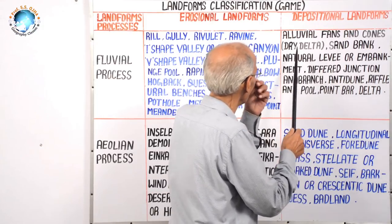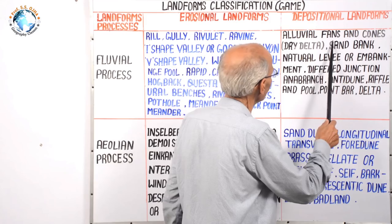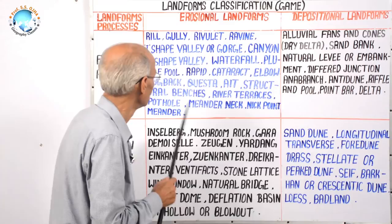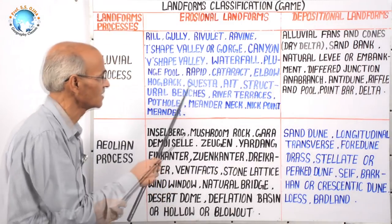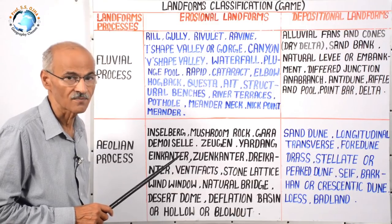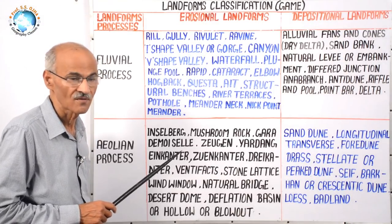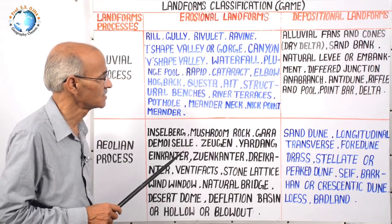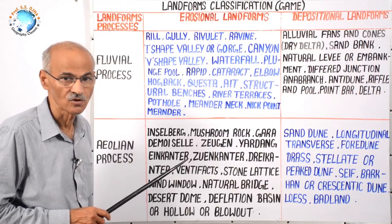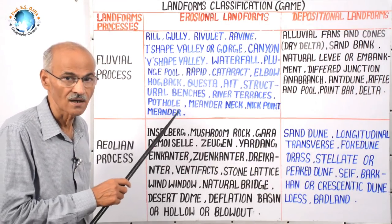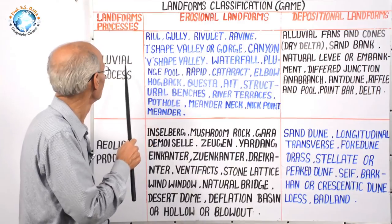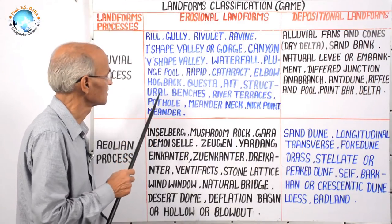In this box, all the depositional landforms by the fluvial process have been given in sequence. The depositional landforms start with alluvial fan and end with delta deposition. We can learn these landforms for two purposes: one for prelim purpose and second for mains purpose. For prelim, sometimes the question is — rill is which type of landform? — so there is a blank box and you have to put rill in the fluvial process box.